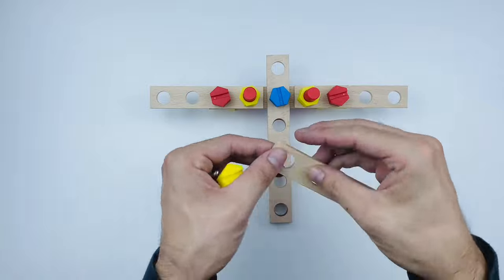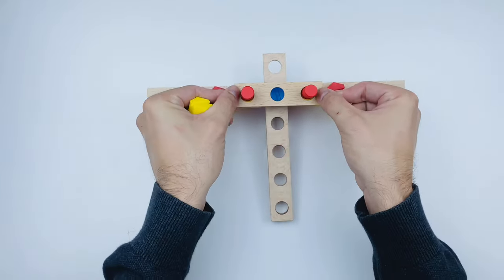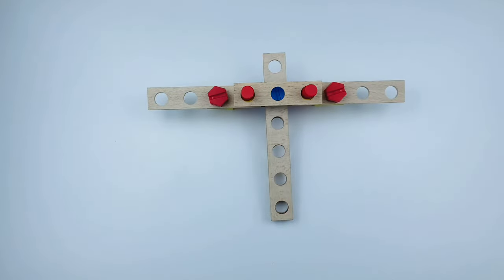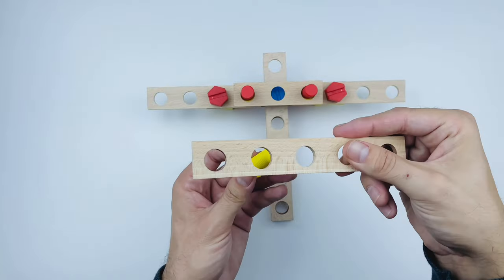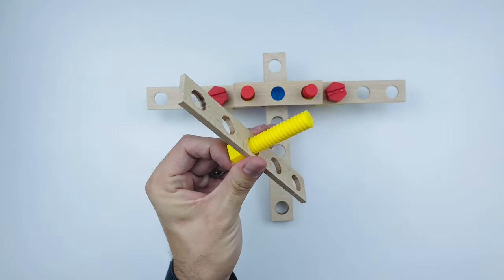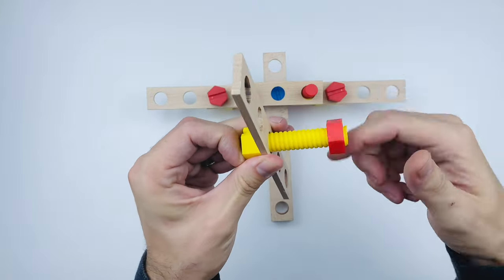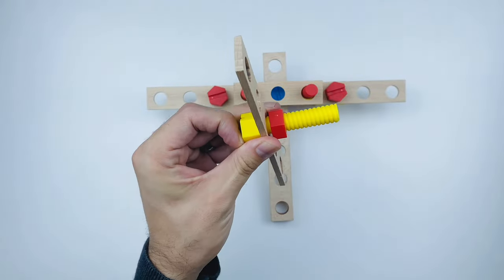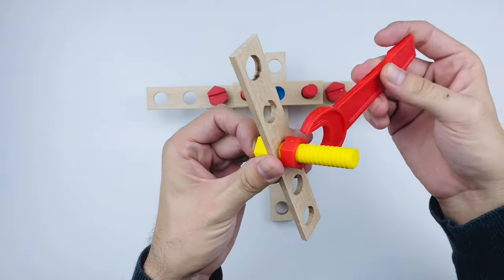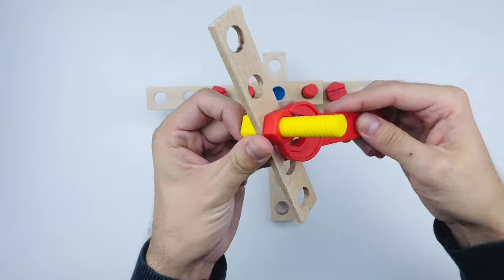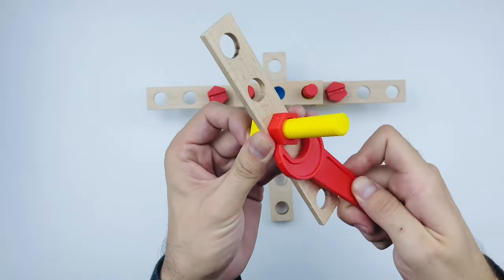Now we need a wooden piece with three holes. And another piece, we'll put the yellow bolt right through the middle hole and fasten it with a red nut. Remember, righty tighty, lefty loosey.